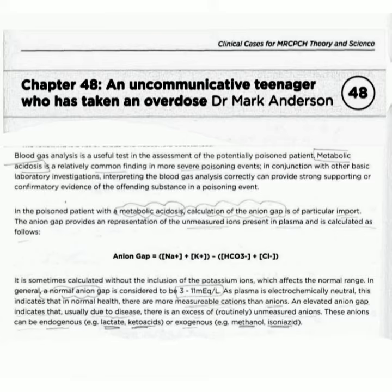The calculation of anion gap is: anion gap equals sodium ion plus potassium ion, minus bicarbonate ion plus chloride ion. It is sometimes calculated without the inclusion of the potassium ions, which affects the normal range.